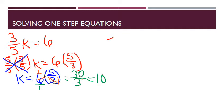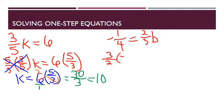They love these fractions! Next: negative one-fourth equals two-thirds b. I'm going to divide both sides by two-thirds, which is the same as multiplying both sides by three-halves. On the right side, two-thirds times three-halves cancels to 1, leaving just b isolated. On the left, three-halves times negative one-fourth gives negative three-eighths. So negative three-eighths equals b.